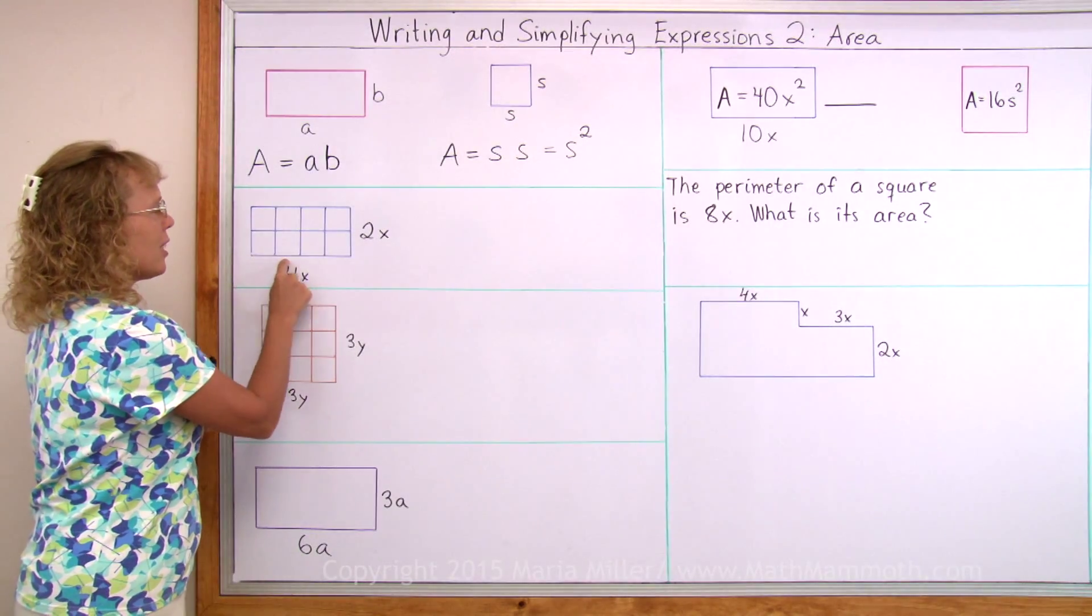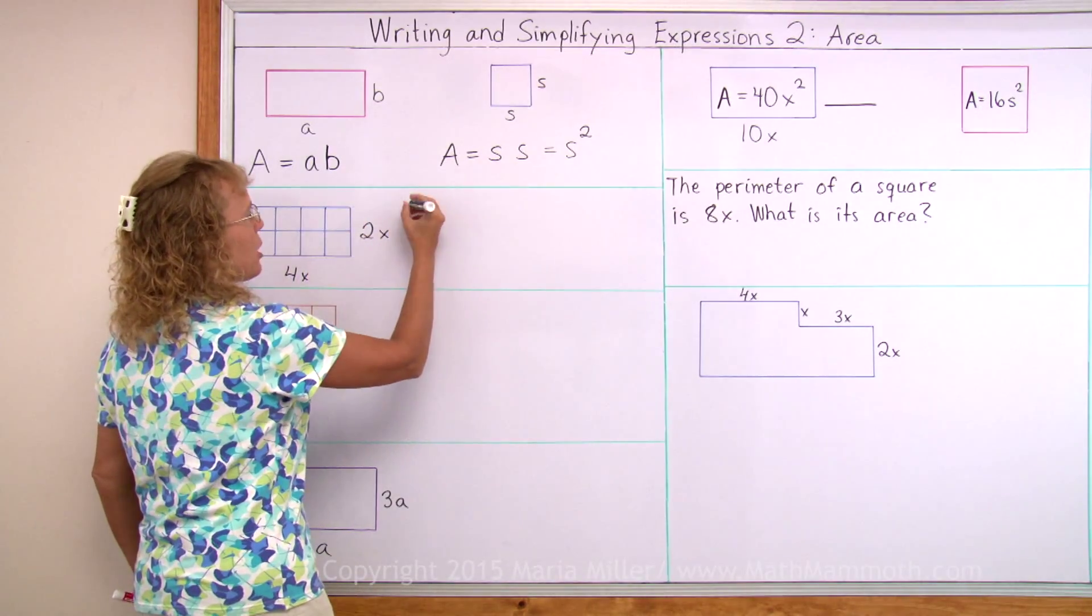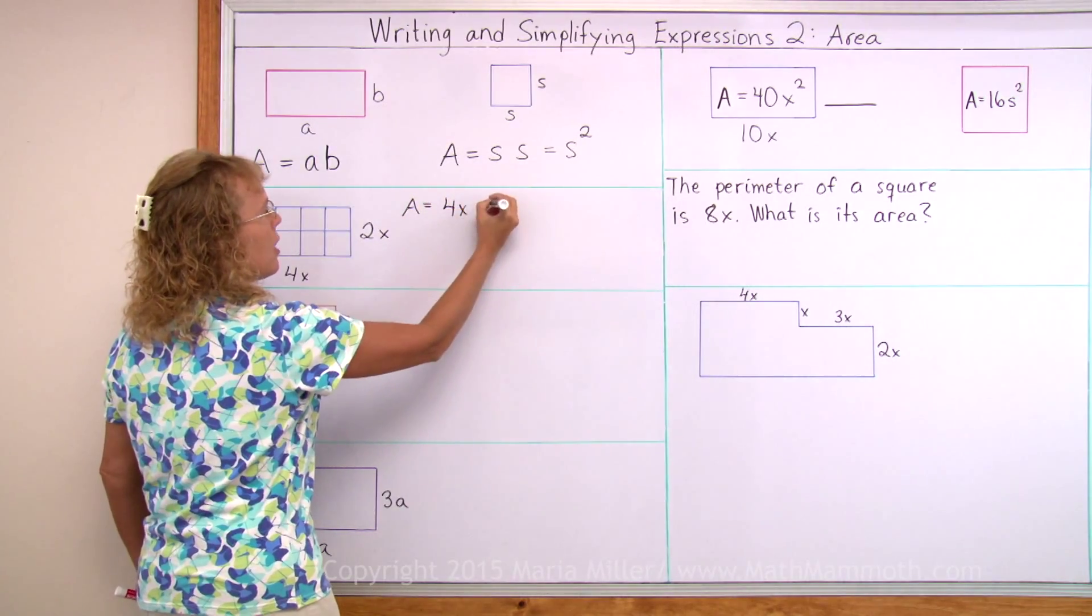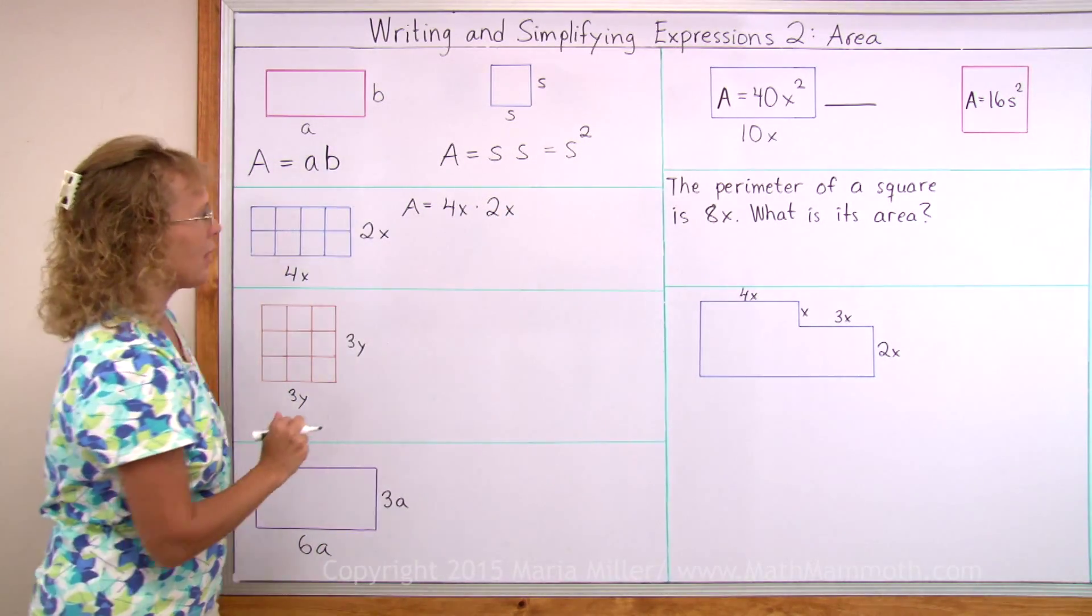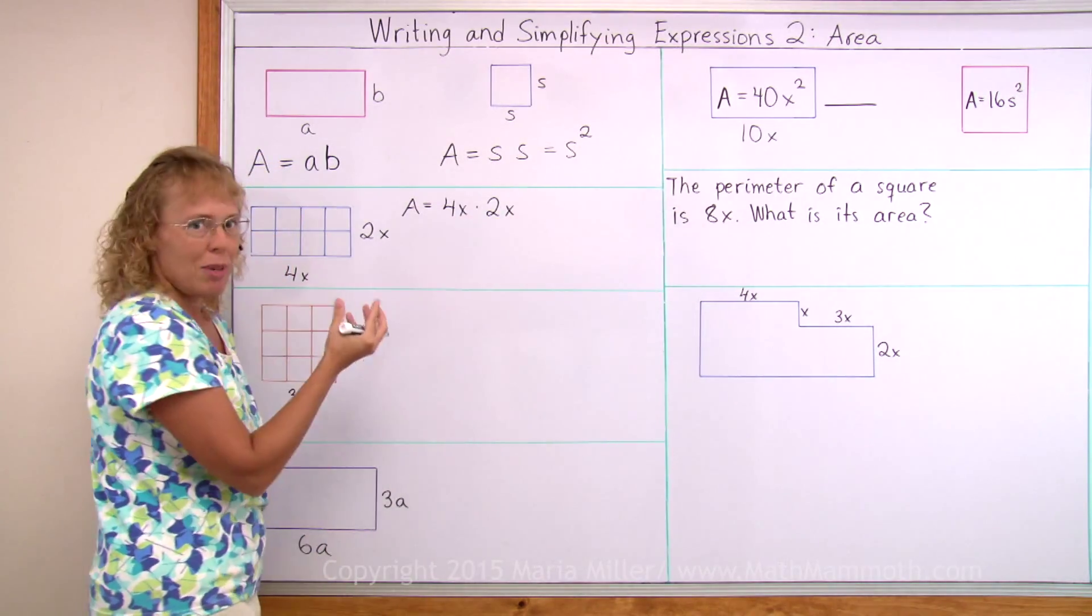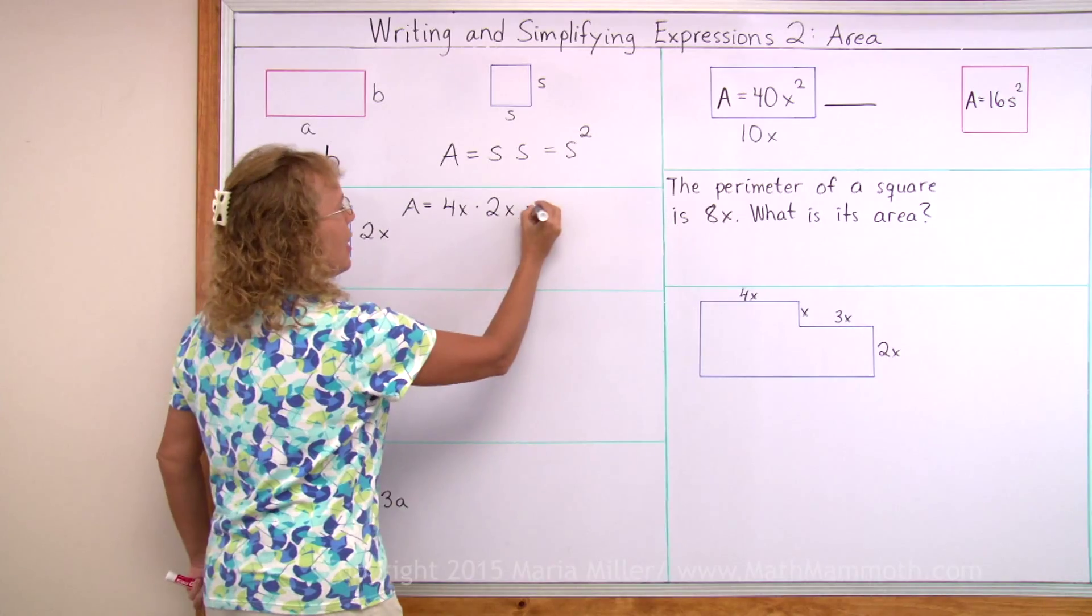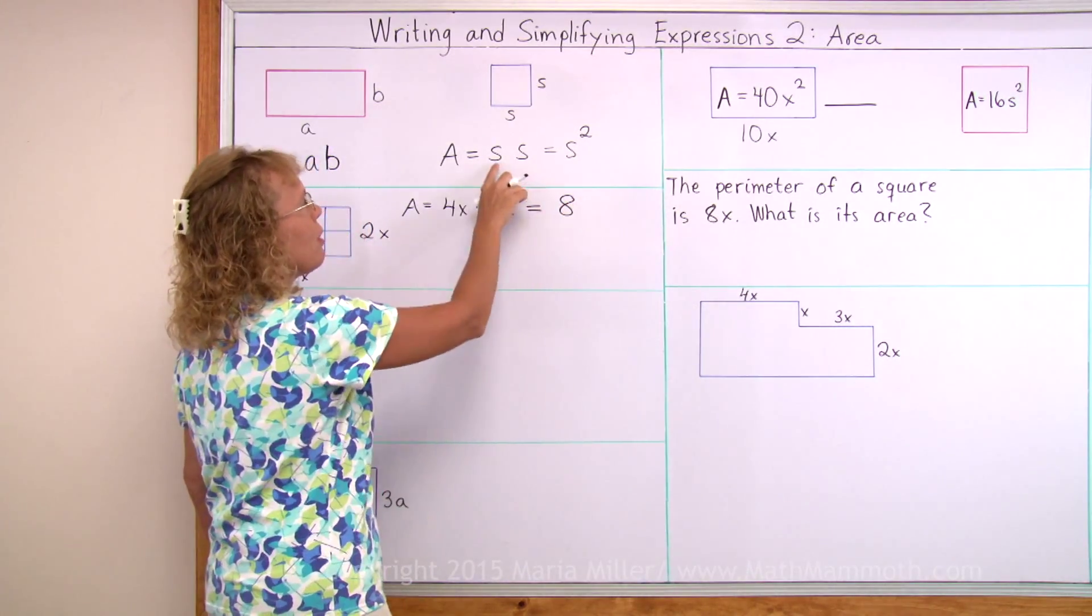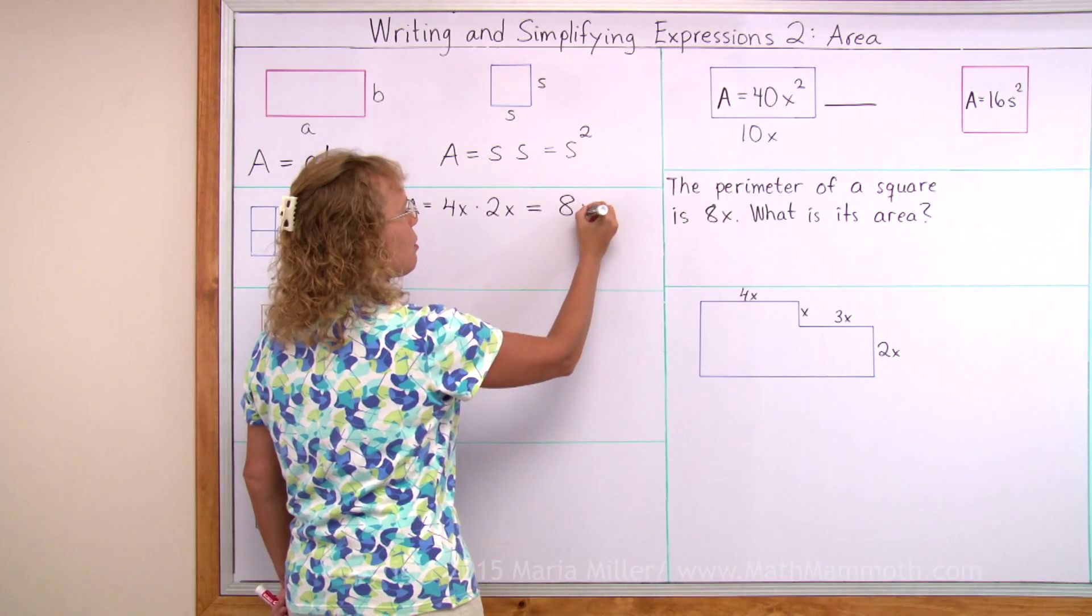This rectangle here, this side is 4x long this way and 2x long that way. Now let's write an expression for the area. It would be again side times side, 4x times 2x. This time we can simplify. It's multiplication, 4 times x times 2 times x. You can multiply in any order. So I can multiply 4 times 2 here and get 8. So I get 8. And then x times x, just like over here we had S times S. So x times x, I can use an exponent for it, x squared.